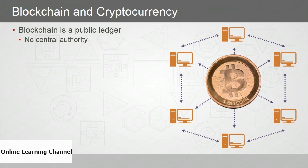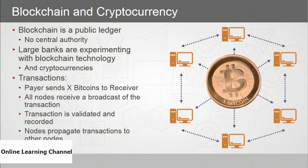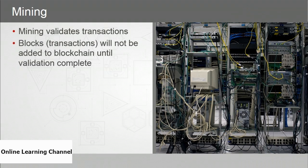The blockchain is a public ledger with no central authority. Here's how bitcoin transactions work: a payer sends bitcoins to a payee — say you're buying a pizza — and all nodes on the bitcoin network receive a broadcast of the transaction. The transaction is validated, recorded, and propagated to other nodes. Mining is used to perform the validation. Blocks won't be added to the blockchain until validation is complete, which involves complex problem solving requiring large amounts of CPU and other resources.